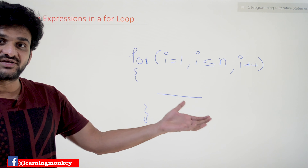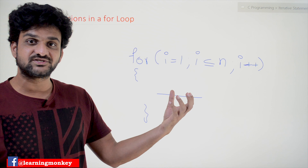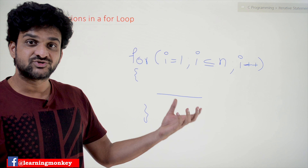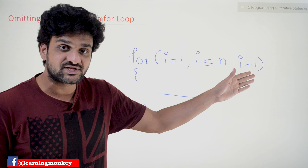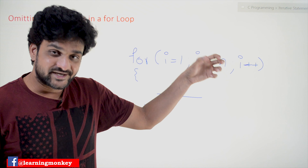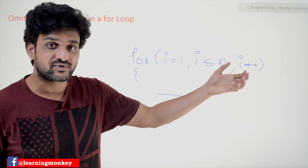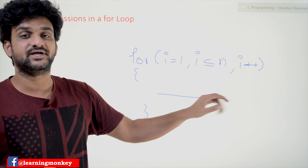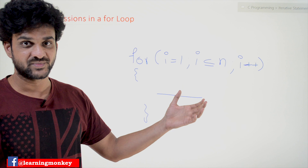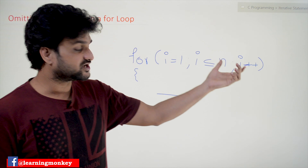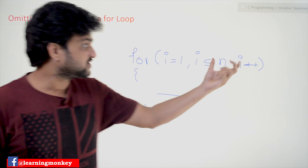So the question is: is it mandatory to give all the expressions within the for loop, or can we omit some of the expressions or all of the expressions? Is it a regular construct that we have to use all the expressions in the for loop, and is it mandatory? No, it is not mandatory, it is not compulsory. We can omit the expressions — the expressions within the for loop can be omitted.